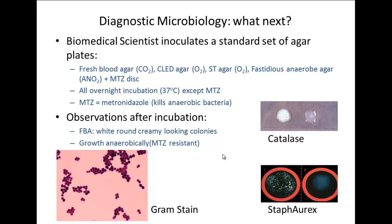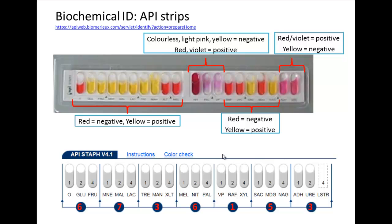The biomedical scientist decides they want a better identification to be sure, so we go on to do an API test. In the API test, we have a series of little cupules — small plastic cups present in a strip — with a series of biochemical tests. In each cupule, we have freeze-dried or dried reagents; they may be sugars such as glucose, fructose, lactose, or mannose. There's an array of biochemical tests. We put a suspension of our organism into each of the cupules and incubate them.